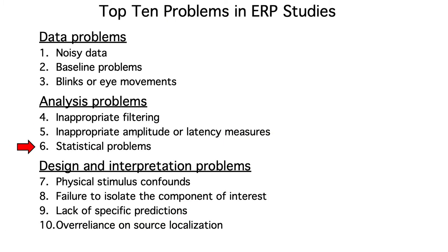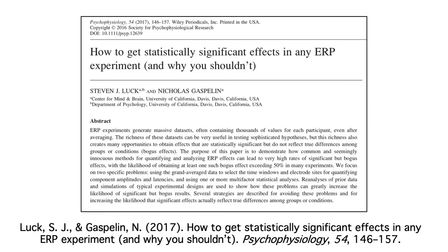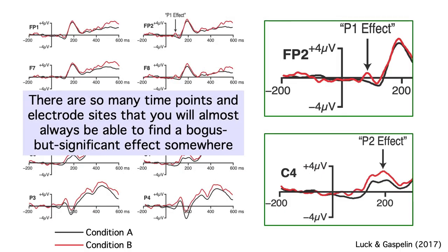Now let's turn to statistical problems. There are lots of potential statistical issues in any study, whether or not it's an ERP study. But the main problem I see in ERP studies is an inflation of the false positive rate. It's just too easy to find bogus but significant effects if you're not careful. This problem arises when researchers look at the data and use the observed effects to decide on what time windows and electrode sites to use in their analyses. When they do that, they can almost always find a significant effect that's just a result of noise.